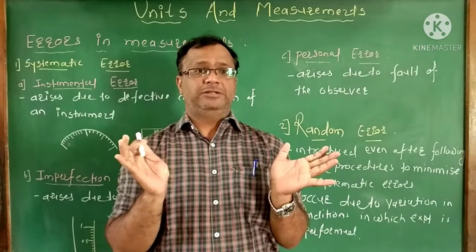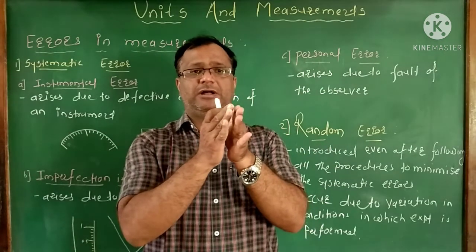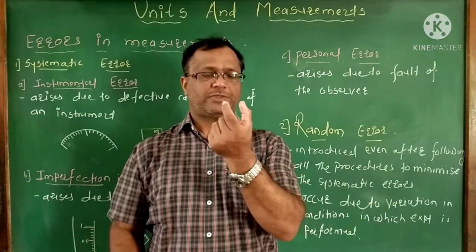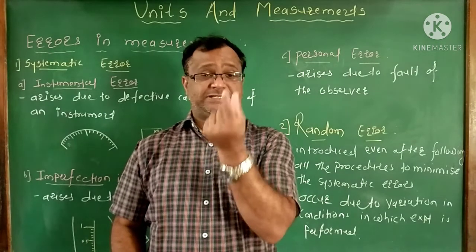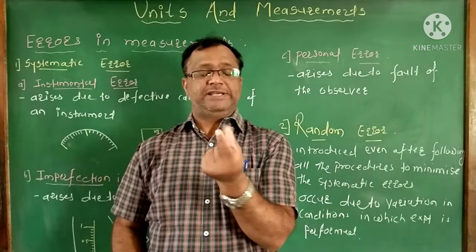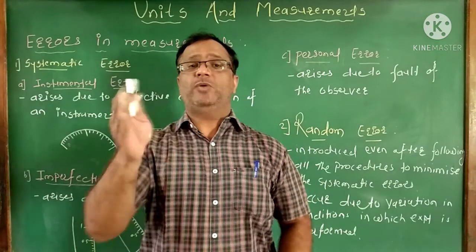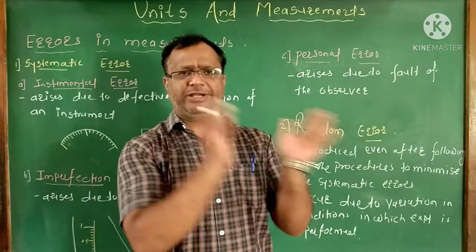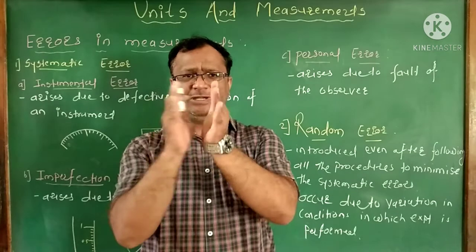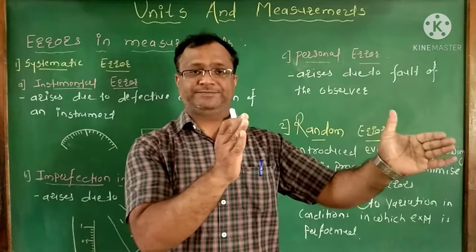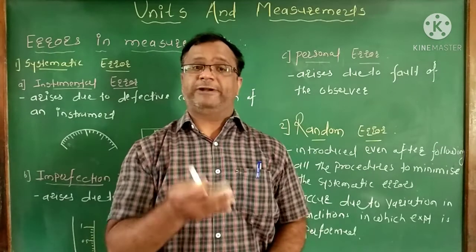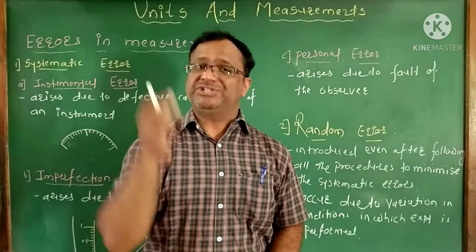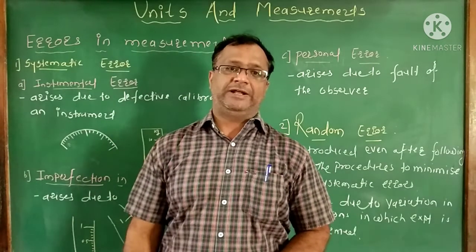For example, take a simple one-foot scale. Ideally, the distance between two lines should be 0.1 cm. But when that scale is calibrated, the distance between the two lines is not the same — the distances are different. The error which arises due to such problems is called instrumental error.